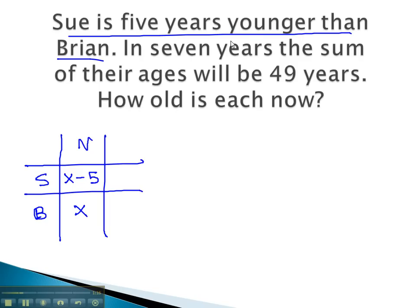Next, we are told in seven years. This moves us seven years in the future. This means we have to add seven to the Sue cell and the Brian cell. x minus 5 plus 7 will give us x plus 2. When we add seven to Brian's cell, we simply get x plus 7.